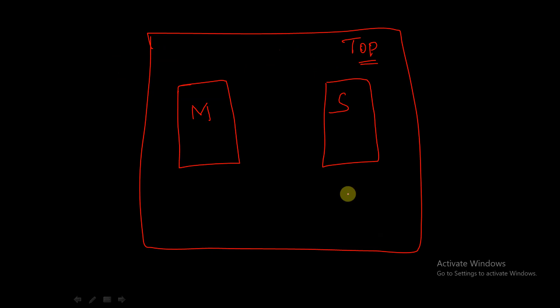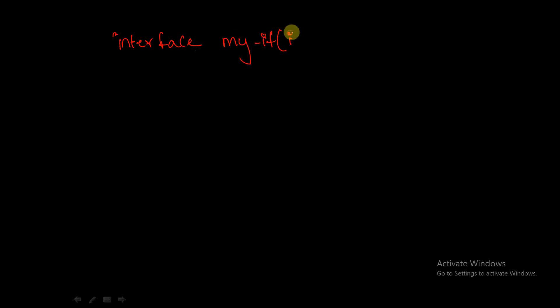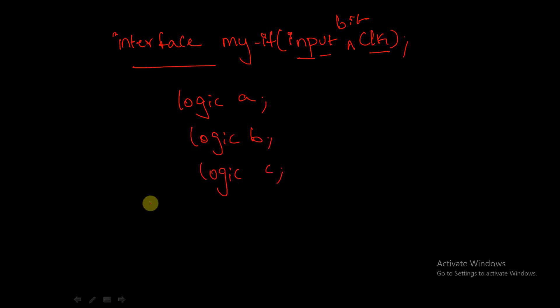This is the process of creating an interface and passing it from the top module to master and slave. Coming to interface arguments, we can have interface arguments as inputs. For example: interface my_interface (input bit clock); and inside we declare logic a, logic b, logic c, then endinterface. So this interface has an input argument: clock.